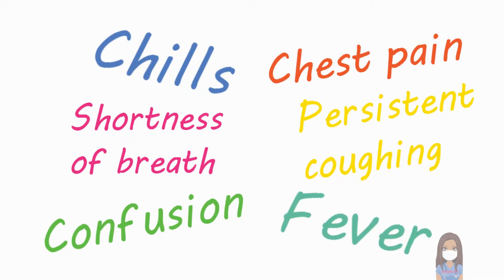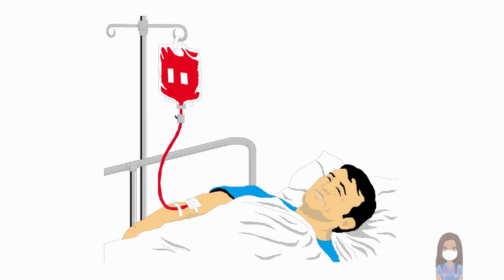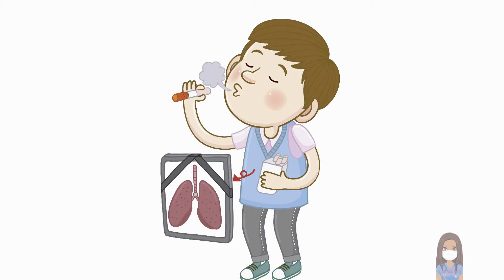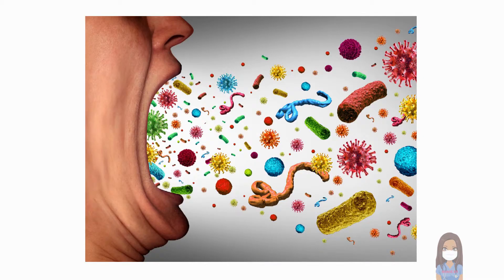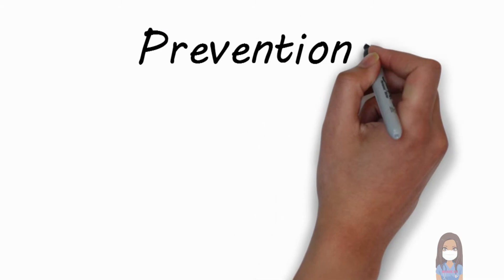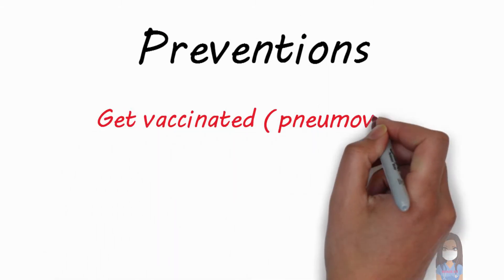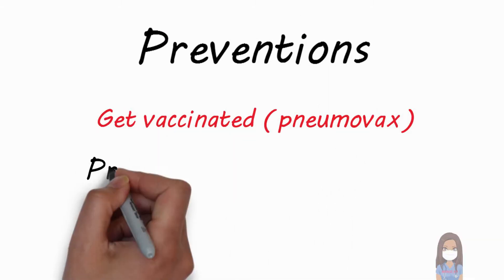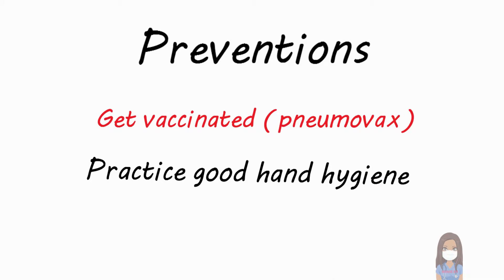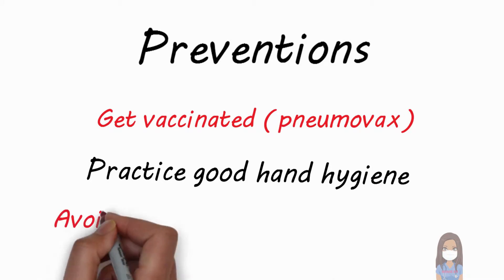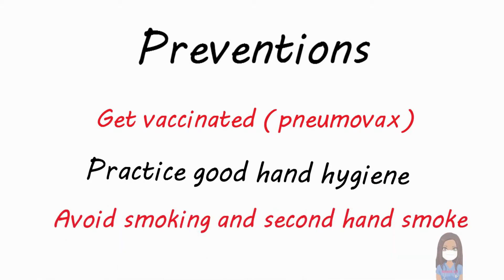Additional symptoms include fever. Risk factors include being hospitalized for a long period, chronic diseases like asthma and COPD, smoking, and a suppressed immune system. Preventions include getting vaccinated, practicing good hand hygiene, and avoiding smoke and secondhand smoke.